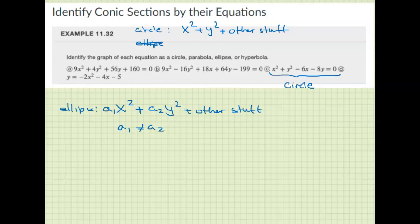Looking through this, we see that a is an ellipse. It has x squared plus y squared, but these are different from each other. The other stuff doesn't matter in identifying what they are. They matter when you find the center and all that stuff, but we're just identifying the graph.